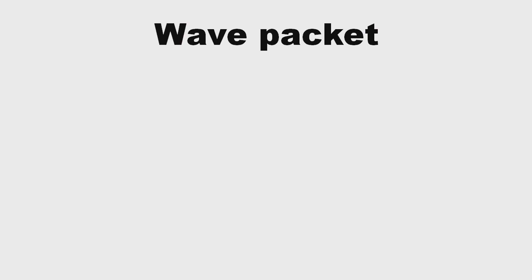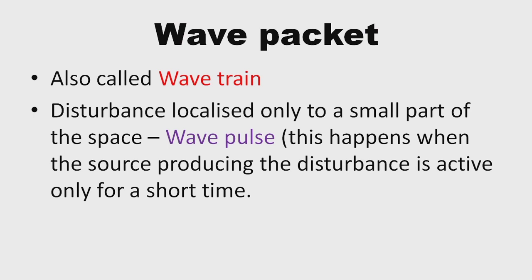Then let's see what a wave packet is — it is also called a wave train. When a disturbance is localized only to a small part of the space at a time, we say that a wave pulse is passing through that part of the space.